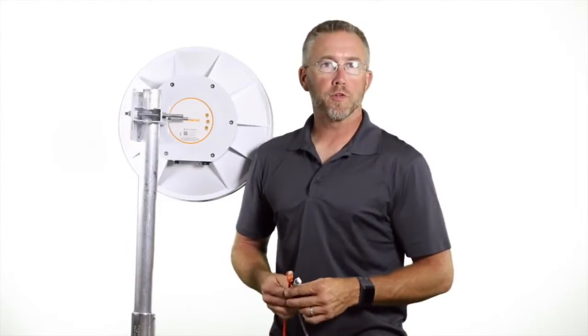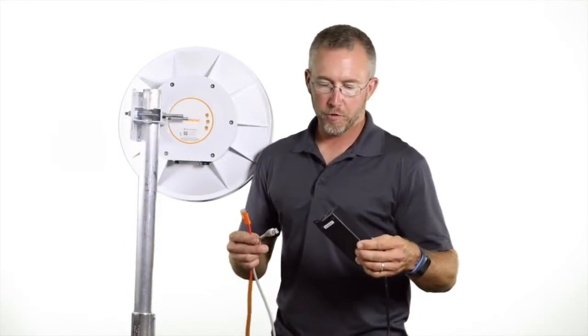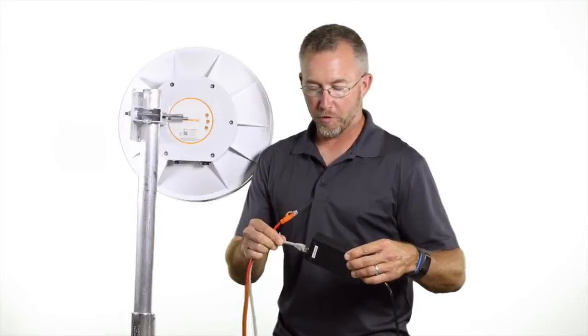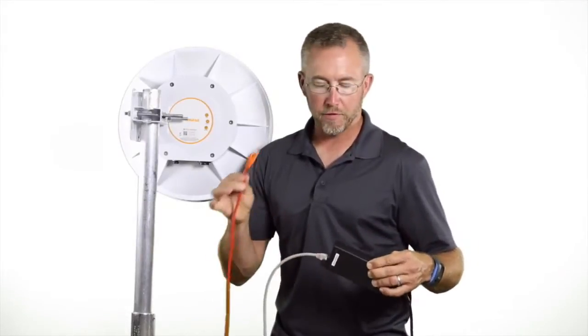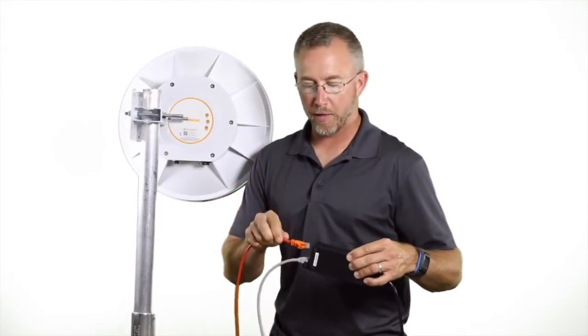Next we're going to hook up our cables to the B5. Let's start with the power over ethernet injector. You have the input for your network connection and then the output for your CAT6 cable.